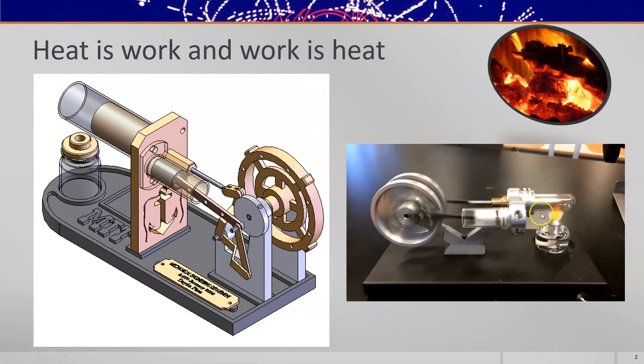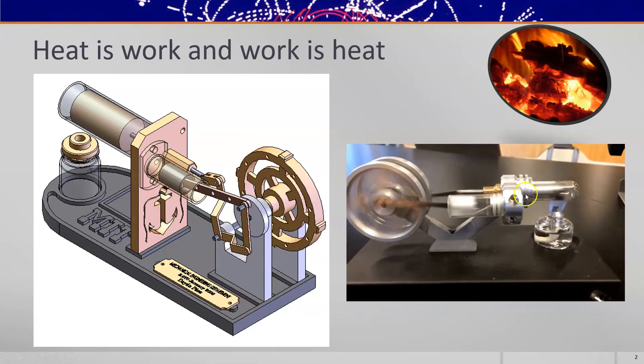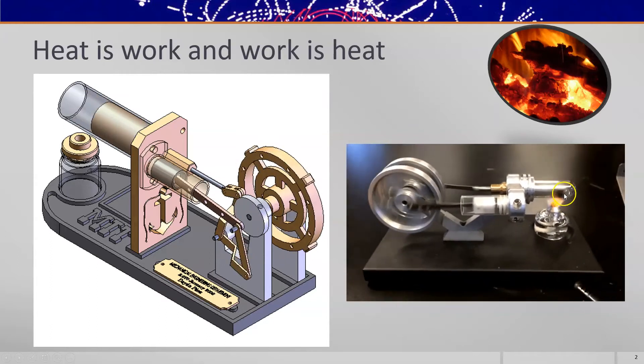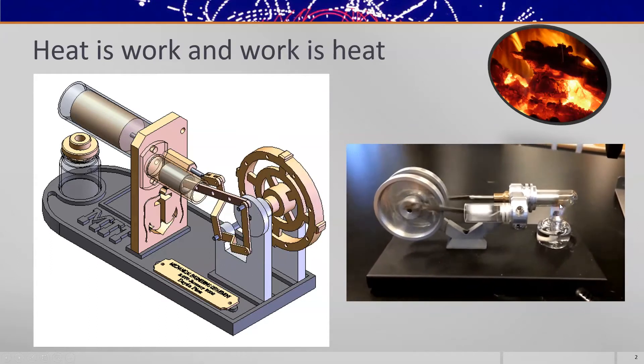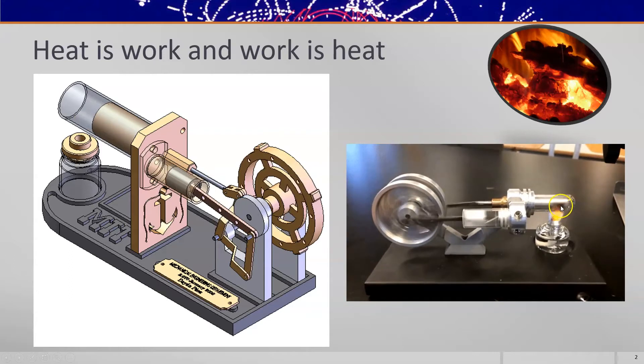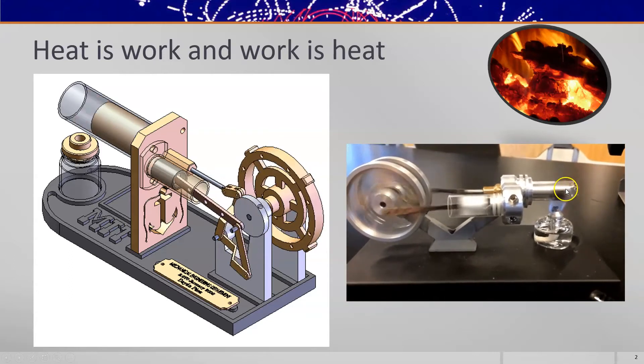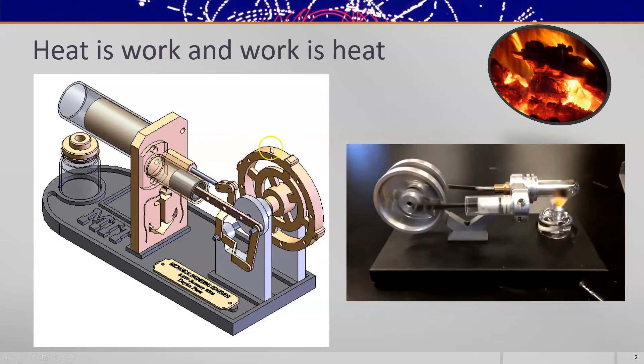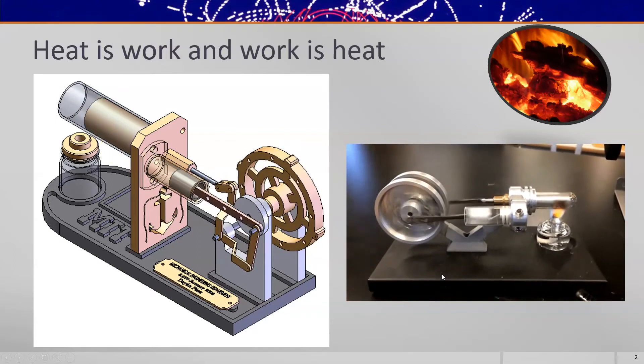If you heat up this Stirling engine, you can see a little heat source supplying energy to the gas. The gas expands, the particles get a little bit faster and they push out on the piston. As they push on the piston they can be made to turn this flywheel and so this machine will go faster.